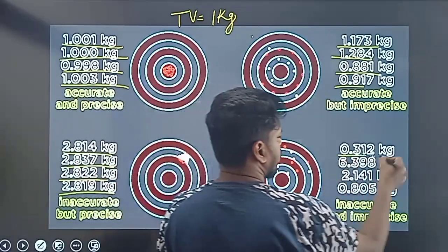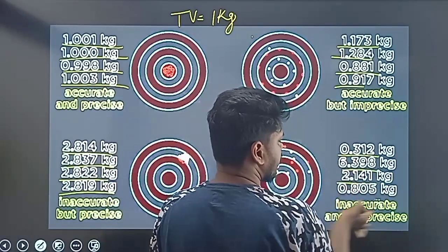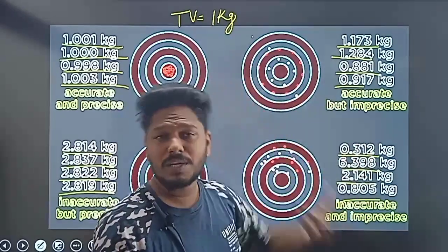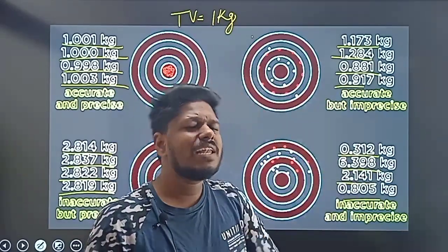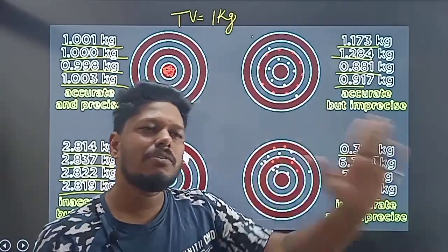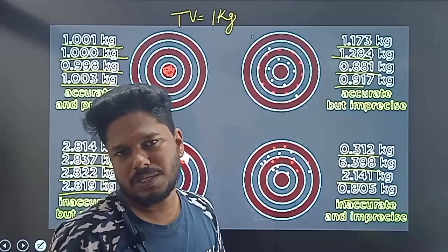Here we go - values like 0.3, 0.6, 2.1, 0.8. These are not related to 1 kg, so the values are inaccurate. Accuracy is about proportion, about how close to the true value.